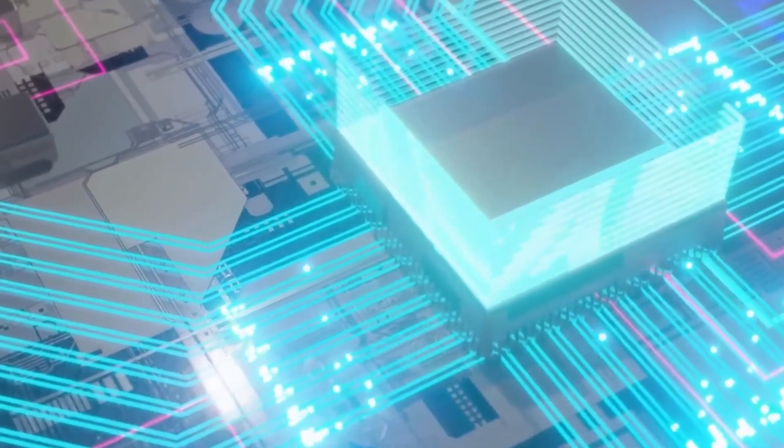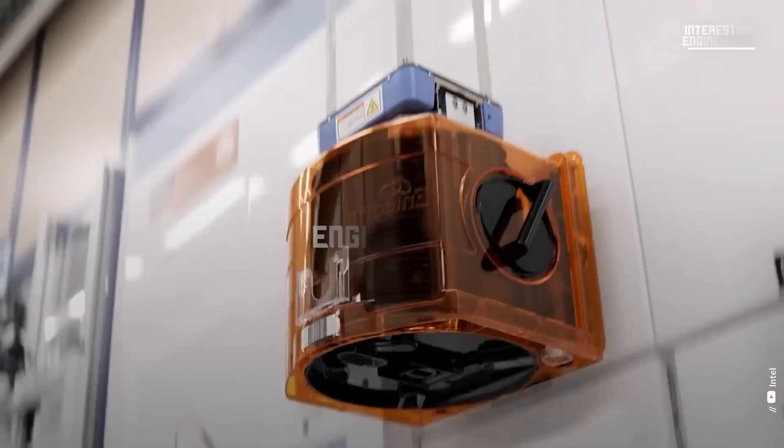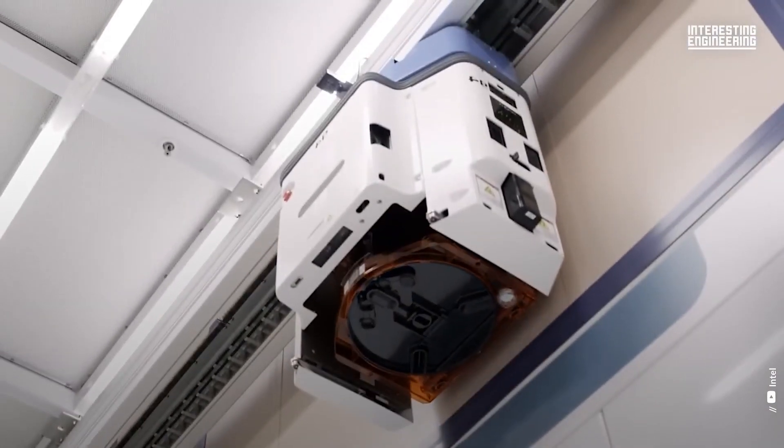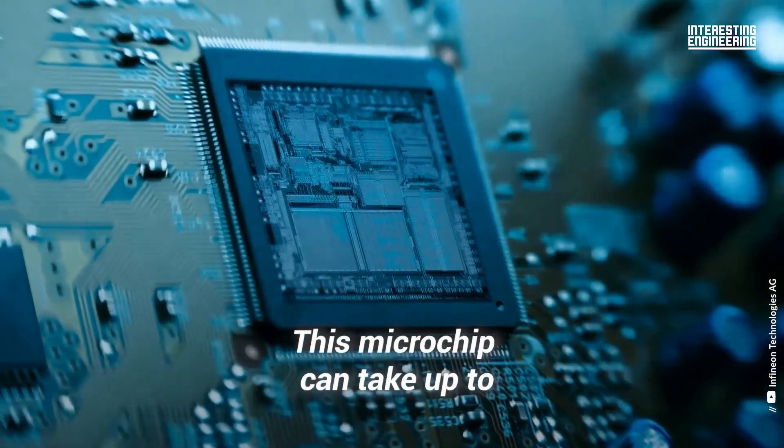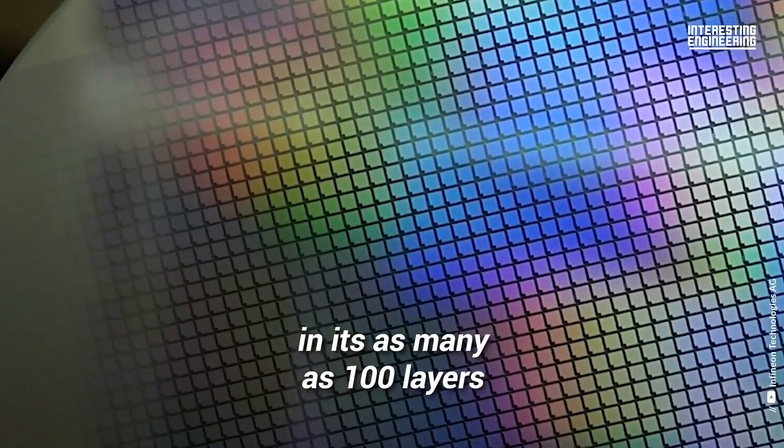But how are silicon microprocessors made? Discover the amazing process of producing billions of microchips in a semiconductor factory. Modern microprocessors contain billions of transistors on a single chip, and most electronic devices today use them.